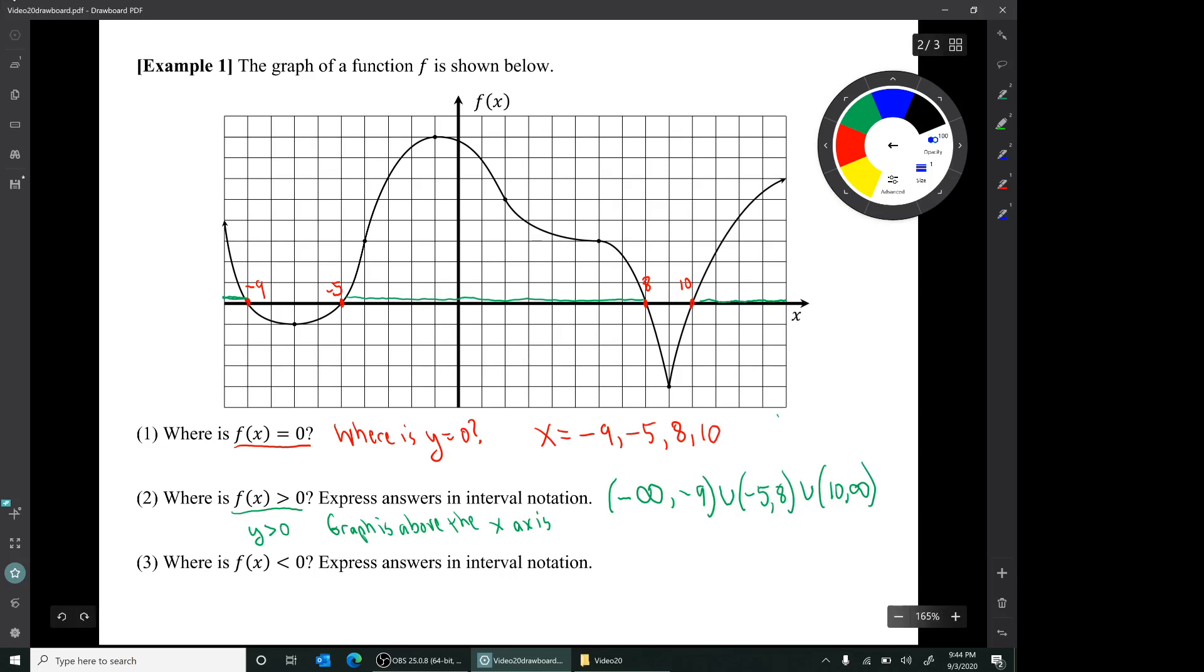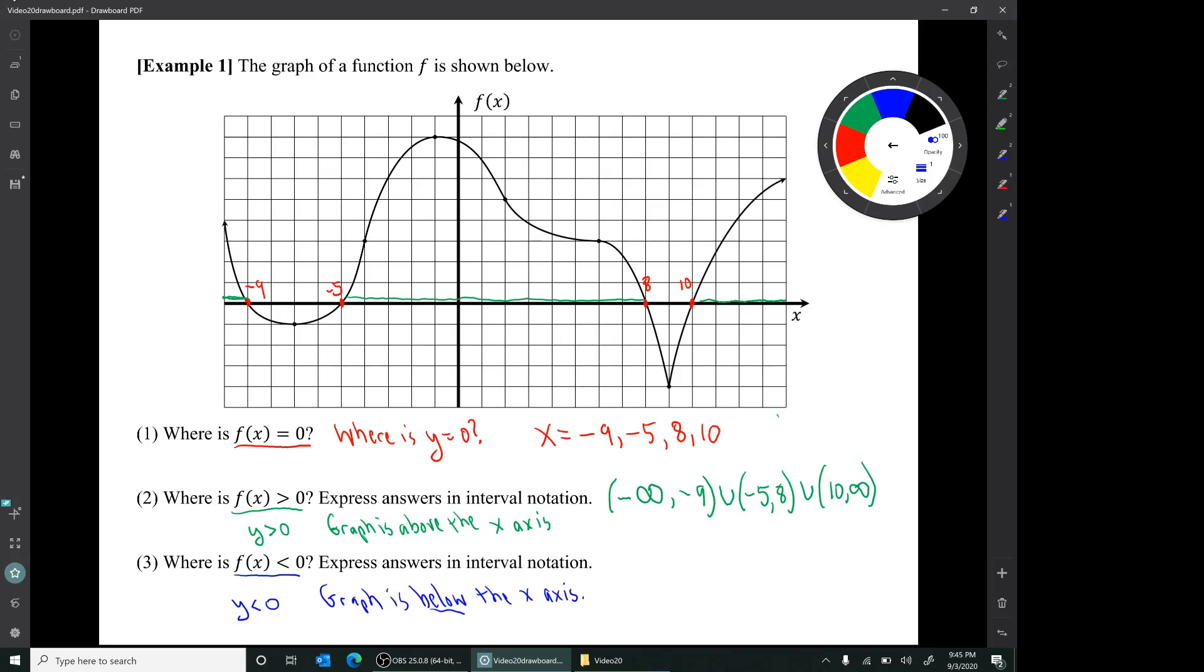The last question for this example is, where is f(x) less than zero? Well, I'm going to color that blue. This corresponds to y less than zero, which means the graph is below the axis. So I'm going to color the part of the x-axis where this is happening blue because it's like being underwater. So those two intervals are the intervals where the graph is below the axis. In interval notation, I would describe that set as... That's it for that example.